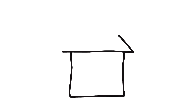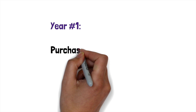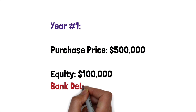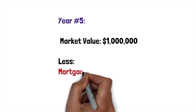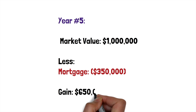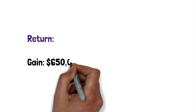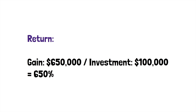Let's look at how leverage can be used to buy a home. In this example we'll cover how leverage is used to purchase a home in year one, and then we'll look at what happens when you sell the home in five years. In year one you buy the home worth $500,000 by putting down an equity down payment of $100,000 and taking a mortgage of $400,000. In year five you decide to sell the home — let's say the market value is $1,000,000. You repay the mortgage balance which now has $350,000 left, and you have a gain of $650,000. Your total return is the gain of $650,000 divided by your initial equity investment of $100,000, which is a total return of 650%.